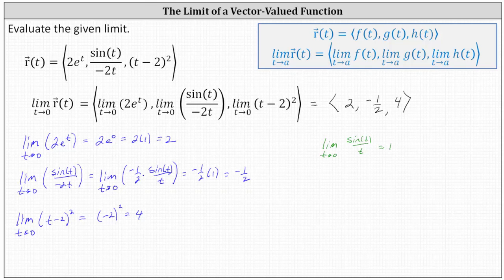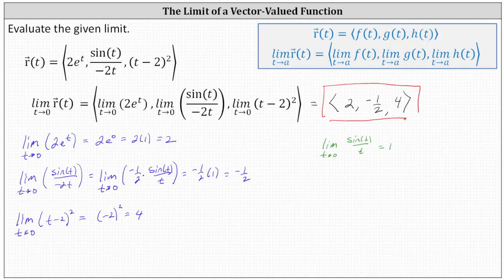So now we know the limit as t approaches zero of the vector-valued function r of t is equal to the vector in which the x component is two, the y component is negative one-half, and the z component is four. I hope you found this helpful.